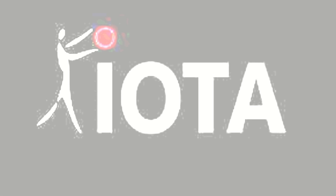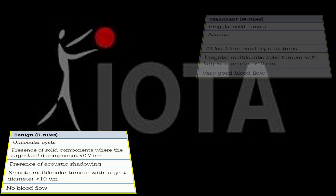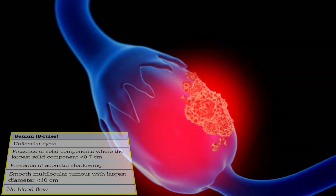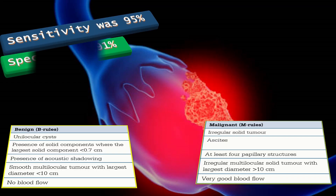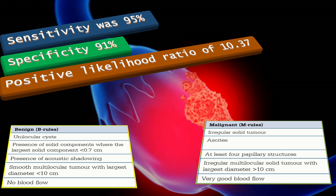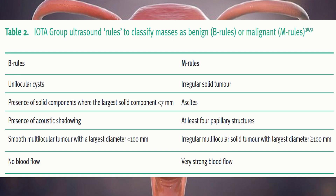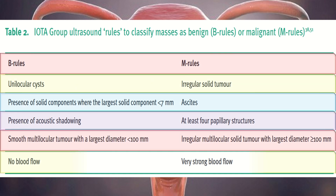The B and M rules are used by the IOTA group. Using these rules, the reported sensitivity was 95%, specificity 91%, positive likelihood ratio of 10.37, and negative likelihood ratio of 0.06. This table shows the IOTA group ultrasound rules to classify masses as benign (B rules) or malignant (M rules). The IOTA group will be discussed in further detail in another video.